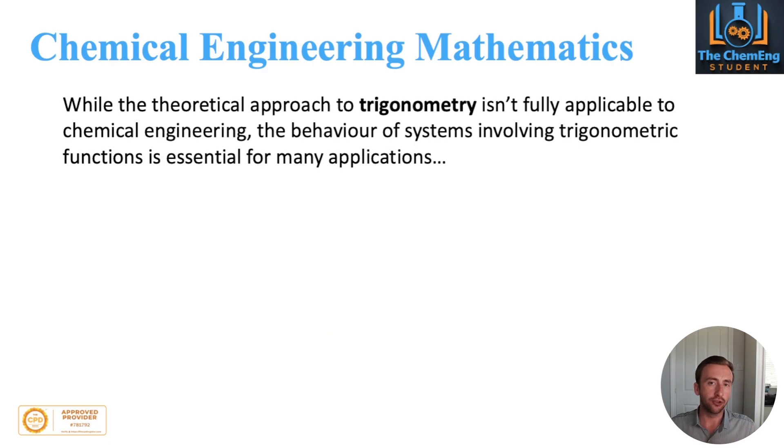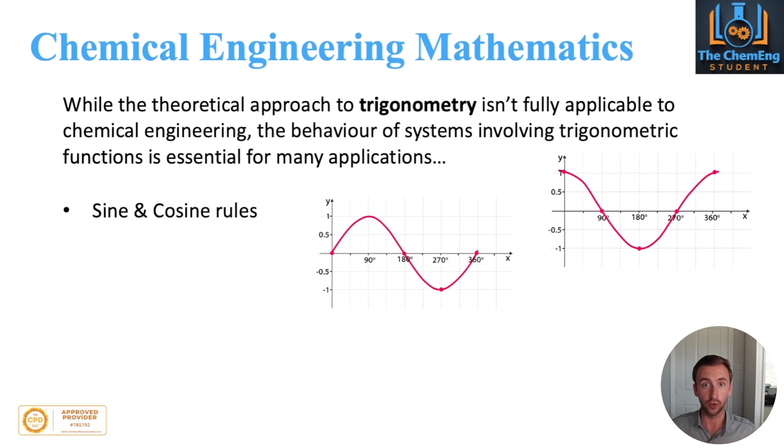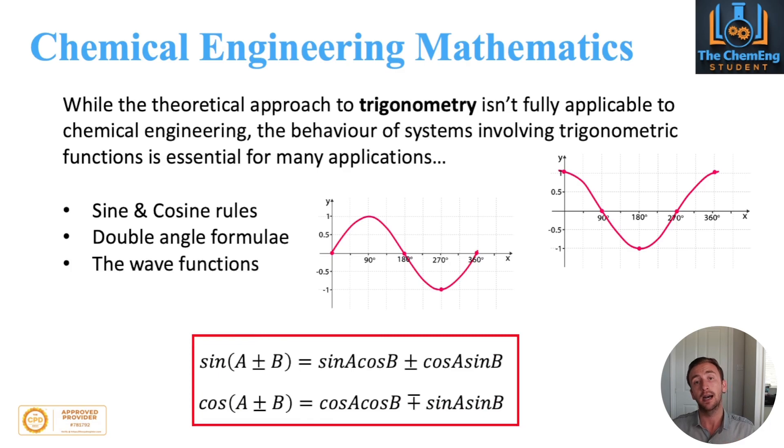While trigonometry does feature, the theoretical approach to trigonometry isn't really applicable to chemical engineering. What is applicable is the behavior of the trigonometric functions in relation to an engineering application. The things you really need are the sine and cosine rule for dealing with waves and functions, the double-angled formulae and the wave function itself. These are the core elements of trigonometry that you should be looking to incorporate. Make sure your knowledge is on point.